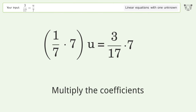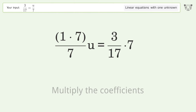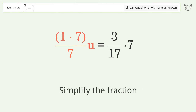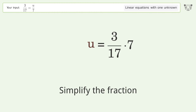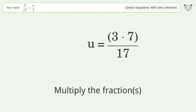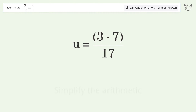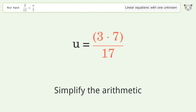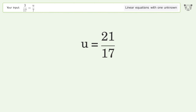Multiply the coefficients. Simplify the fraction. Multiply the fractions. Simplify the arithmetic. And so the final result is u equals 21 over 17.